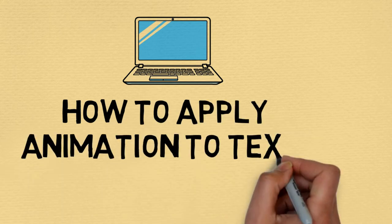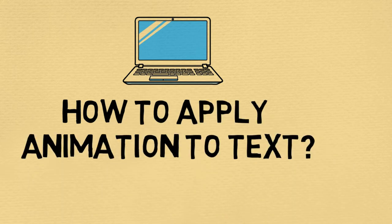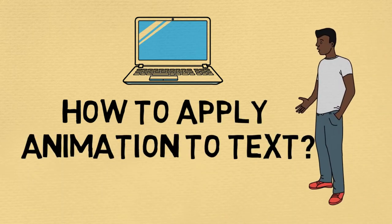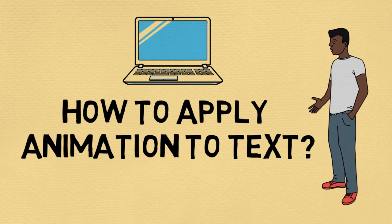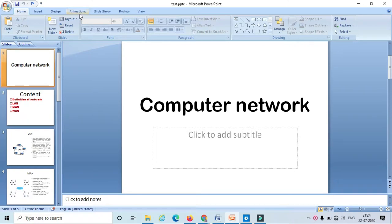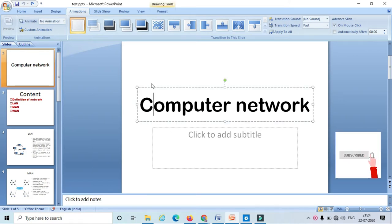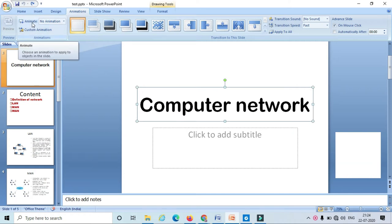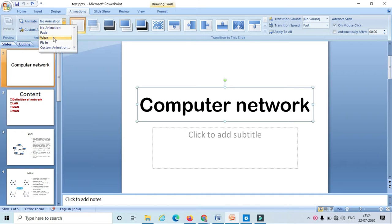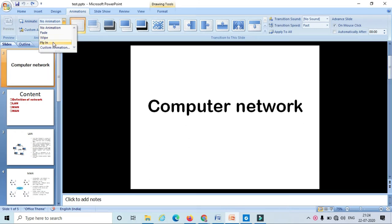Hello friends, welcome to my channel. Today in this tutorial I will show you how to apply animation to text. In order to apply the animation, just go over to the animation tab. To apply the animation, select the text and go to the animate option. Here we have some default animations: fade, wipe, and fly in.